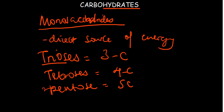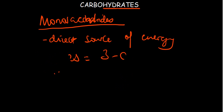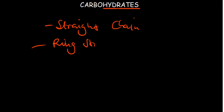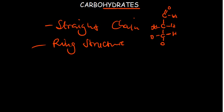These monosaccharides can actually exist in different forms — they can either be found in a straight chain or a ring structure. The straight chain is what we call a Fischer projection. When you see a straight-chain structure like this, it's not forming any ring — this is the Fischer projection.